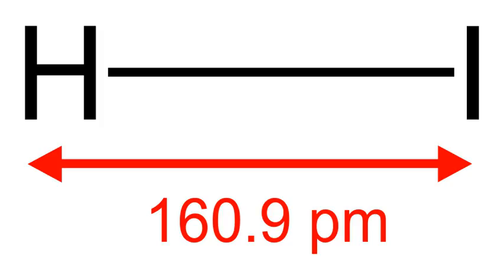Another way HI may be prepared is by bubbling hydrogen sulfide steam through an aqueous solution of iodine, forming hydroiodic acid, which is distilled, and elemental sulfur. This is filtered. H2S plus I2 yields 2HI plus S.